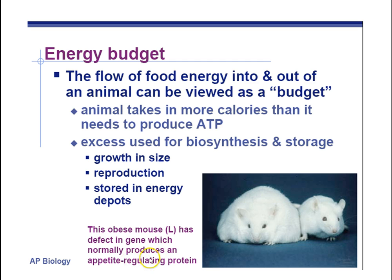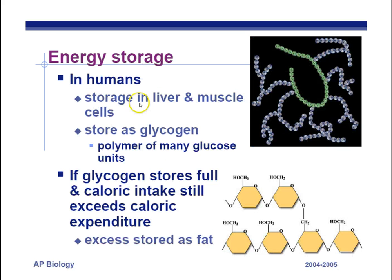Now, there is some genetic predisposition to regulating appetite, and scientists are discovering more and more about this. The obese mouse has a defect in a gene which doesn't suppress the appetite, so this mouse just keeps on eating.